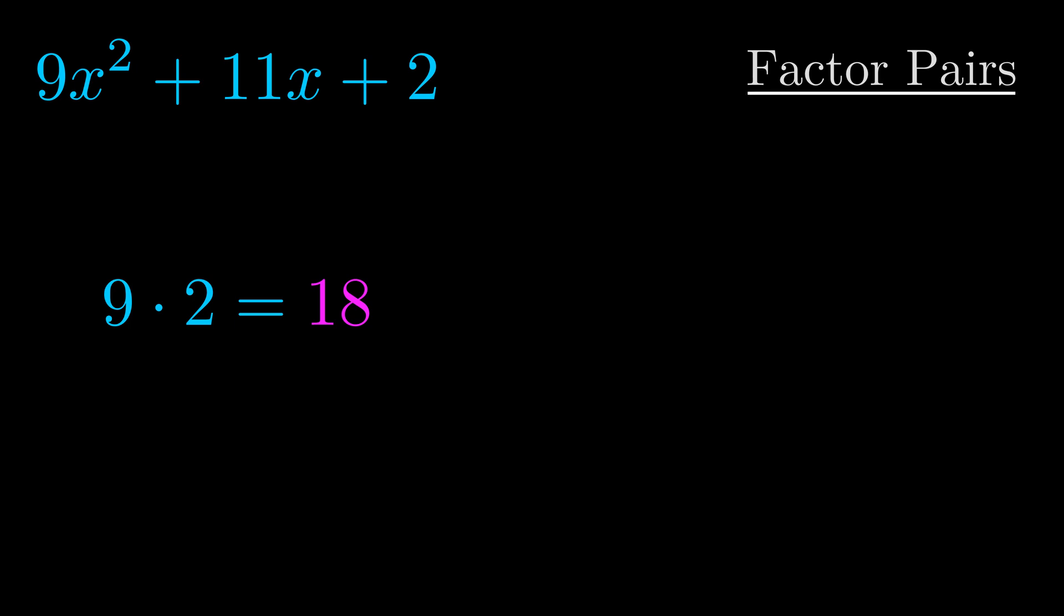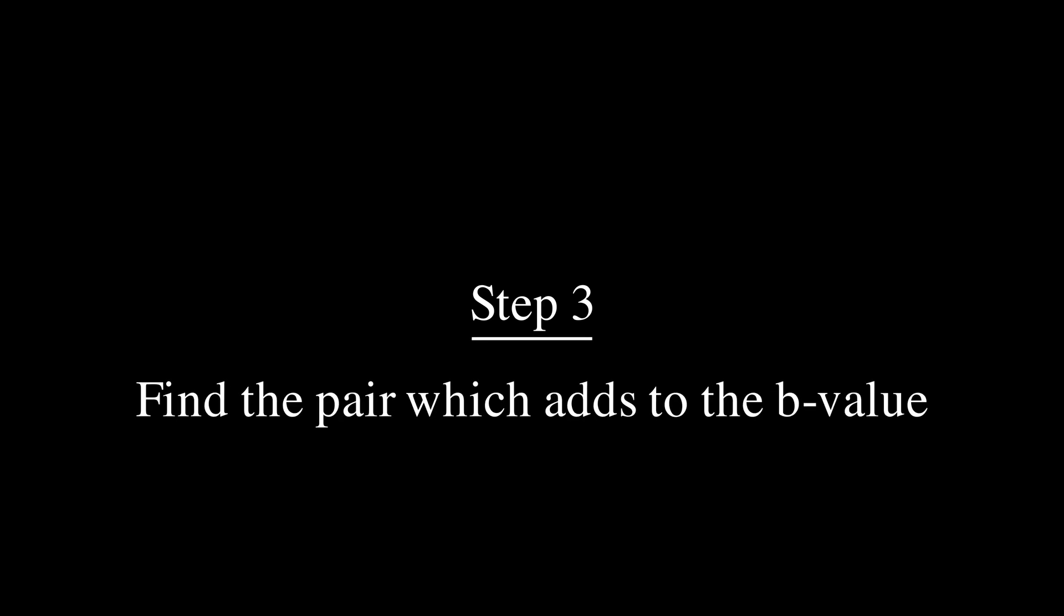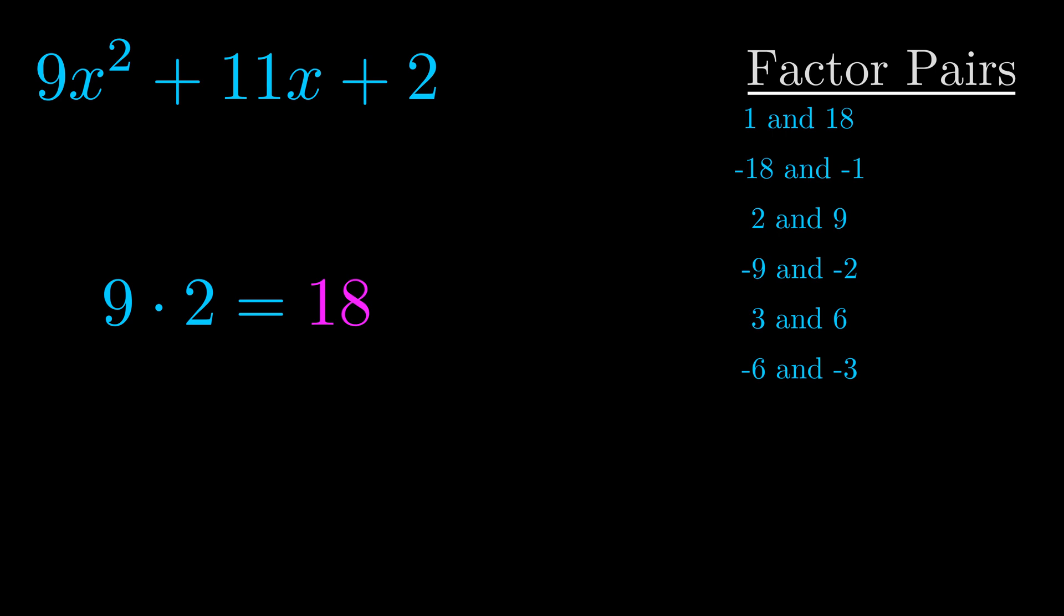Okay here's what I came up with. Now once you have these factor pairs the goal is to find which of these pairs adds to the b value. The b value is the coefficient on the x term. That's the middle term, the one that we haven't done anything with yet. And really this is the only factor pair that we need.